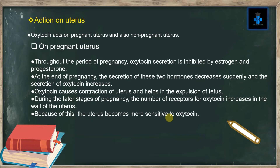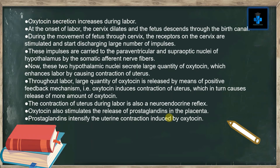During the latter stage of pregnancy, the number of oxytocin receptors increases in the wall of the uterus, making the uterus more sensitive to oxytocin. Oxytocin secretion increases during labor. At the onset of labor, the cervix dilates and the fetus descends through the birth canal. During the movement of the fetus through the cervix, receptors on the cervix are stimulated and discharge a large number of impulses, which are carried to the paraventricular and supraoptic nuclei of the hypothalamus by somatic afferent nerve fibers.